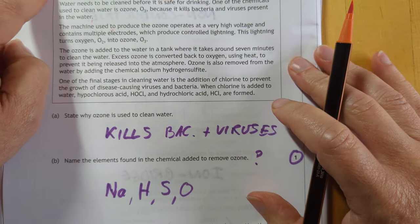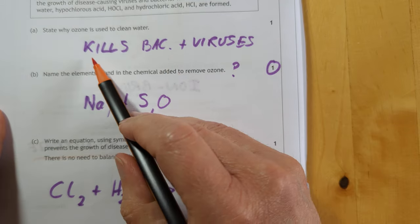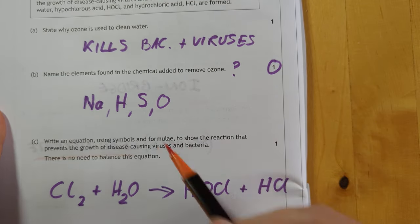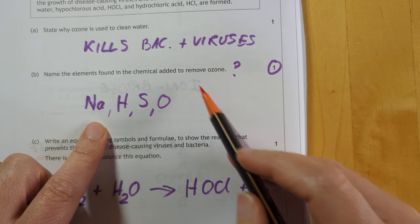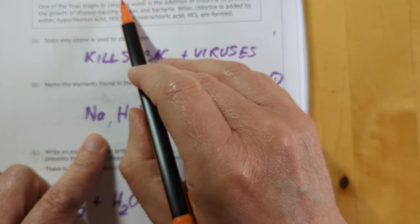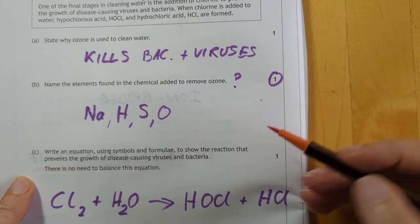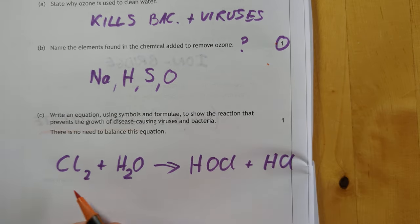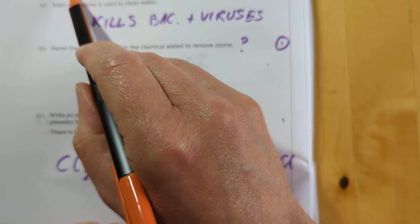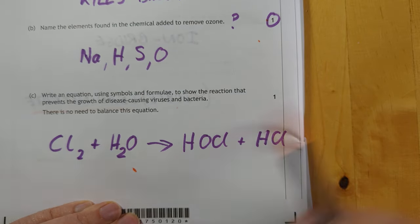Then we come to our second read the passage and answer the questions one here. Ozone kills bacteria and viruses. Name the elements found in sodium hydrogen sulfite. That seems a lot of work for one mark, but then again, maybe not. This one here, turn that sentence here into an equation. You get this. Don't need to balance it, so I'm not going to.